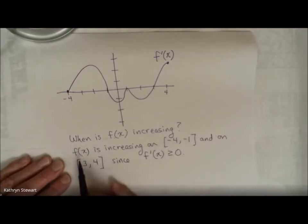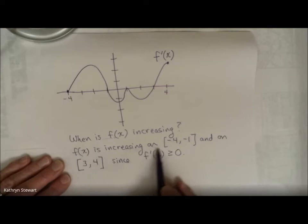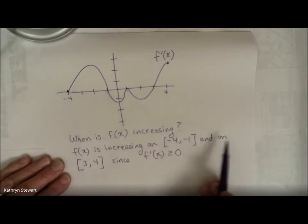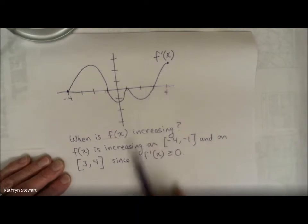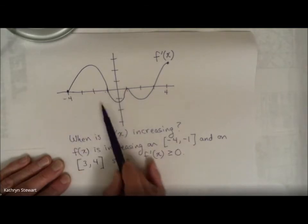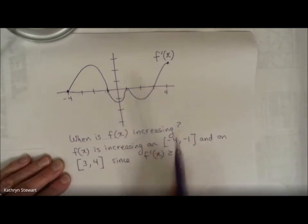Okay, I hope you saw that f of x is increasing on the intervals negative 4 to negative 1 and on 3 to 4 since the derivative is positive. I also put here or equal to because there is a moment, of course, when the derivative might be equal to zero.